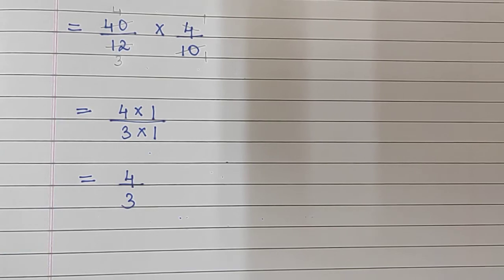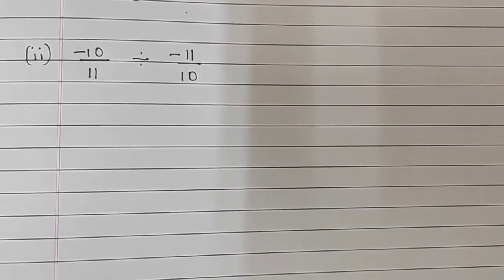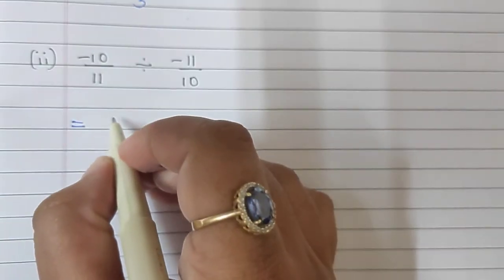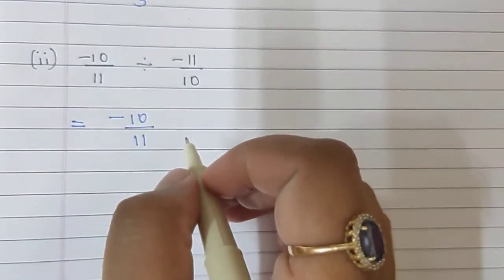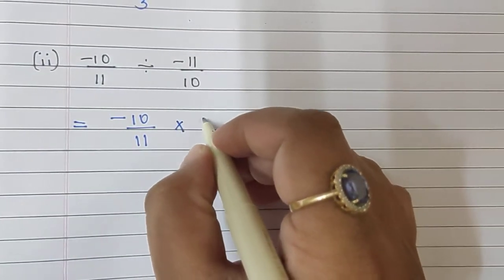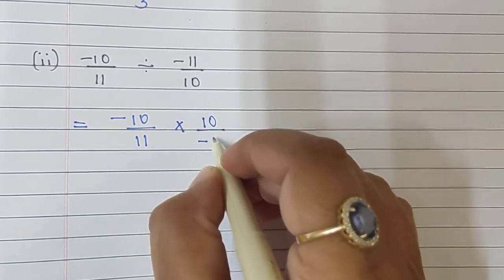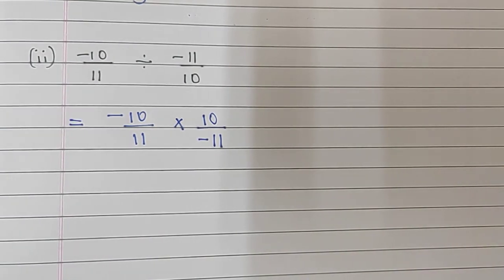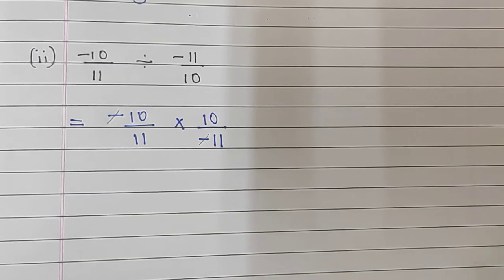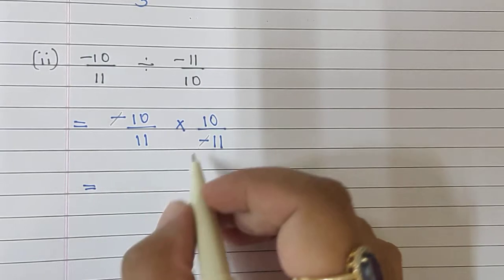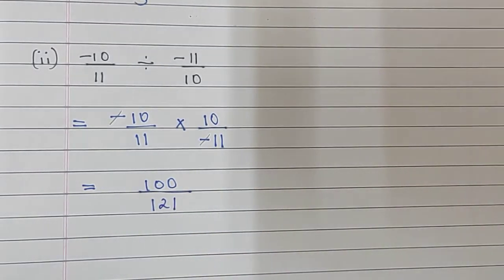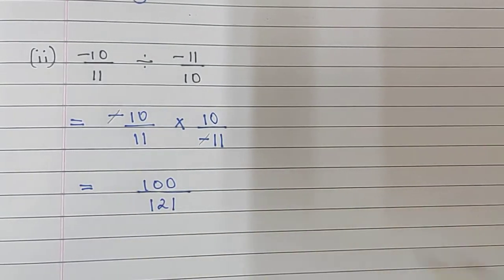Sum number 2 is minus 10 upon 11 divided by minus 11 upon 10. We write minus 10 upon 11, change division to multiplication, and write the reciprocal: multiply by minus 10 upon 11. The only cancellation is that the minus and minus signs cancel each other. So 10 into 10 is 100 upon 11 into 11 is 121. Since minus and minus cancelled, there is no minus sign in the answer. Our answer is 100 upon 121.